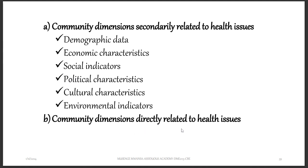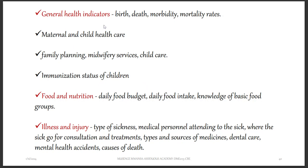Some dimensions directly affect health. For example, general health indicators like birth, death, morbidity, and mortality — morbidity refers to unhealthiness in a community, and mortality refers to deaths being recorded. This can include maternal and child health care, family planning, midwifery services, child care, and immunization status of children. Also look at food and nutrition — daily food budget, daily food intake, and knowledge of basic food groups. People who only eat carbohydrates with no balance can develop health problems.